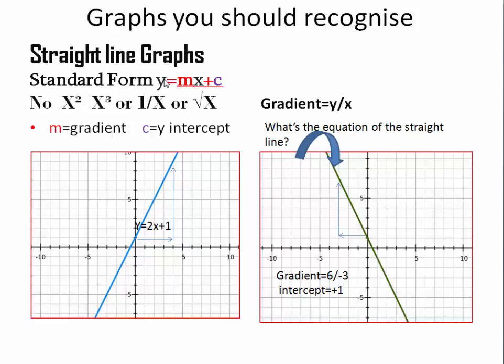They have the standard form y equals mx plus c, where m is the gradient and c is the intercept with the y-axis. In the equation there should be no x squared or x cubed or 1 over x or square root of x. Here we have the graph of y equals 2x plus 1. So we can see that the c is plus 1. It crosses the y-axis at plus 1 and the gradient is 2.